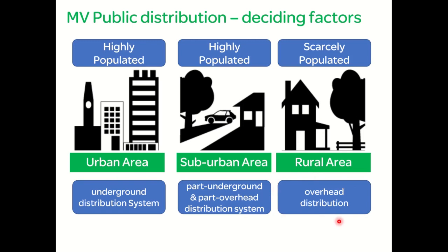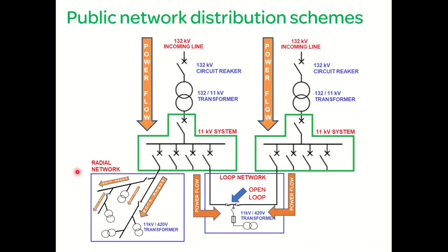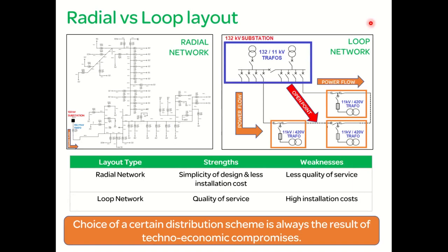Distribution schemes in the public network are typically of two types: radial network and loop network. In a radial network, there is a single feeding line from the MV switchgear in the high voltage substation, and power is distributed like branches in a tree — any fault in the line can cause a blackout in the entire area. In the loop network, power is distributed using two sources from the MV switchgear; however, at one time only one loop remains closed and the other remains open, so in the case of a power outage from one source, power supply is shifted to the other source. Examples of radial and loop networks show the single-source branch structure versus the two-source loop scheme.